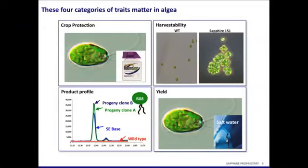Last is yield. Yield is the most important aspect of agriculture. A good example of yield is having the ability to grow algae not in freshwater but in saltwater, so you can increase its ability to grow in many different areas and increase your yield overall. The data I'm going to show today in the next two slides I have not talked about in public — this is the first time I've spoken about it. The four traits that are important in agriculture turn out to be just as important in algae.